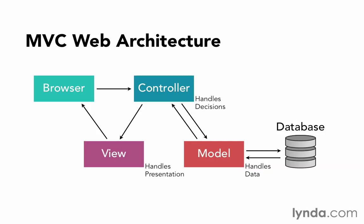Rails is built using this MVC architecture, and we want to try and follow this architecture and keep our code in the right places. Decision code goes in the controller, data code goes in the model, and presentation code goes in the view. Rails actually has names for the code libraries it uses for these three parts.